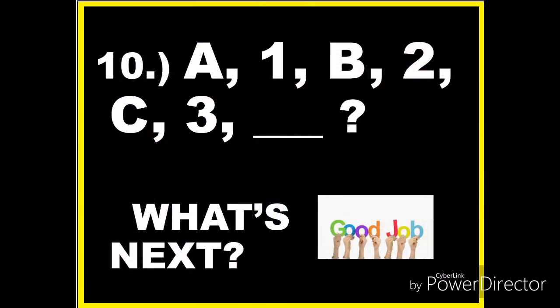Next, let's have number ten. We have A, 1, B, 2, C, 3. What's next? Observing the pattern: first letter A, the number 1, second letter B, number 2, third letter C, number 3. Therefore the next is the fourth letter, which is D.